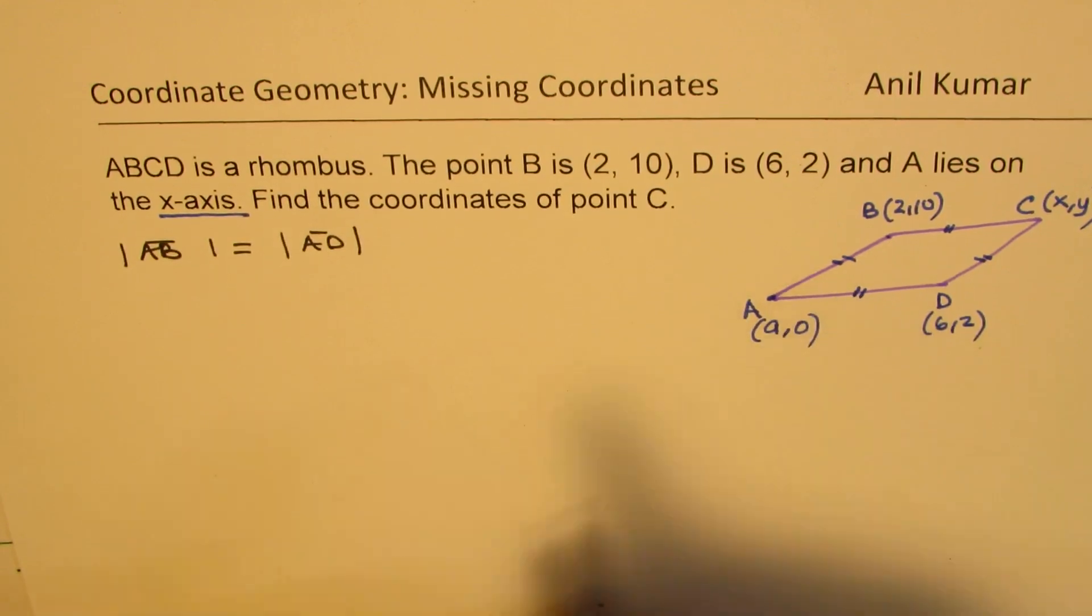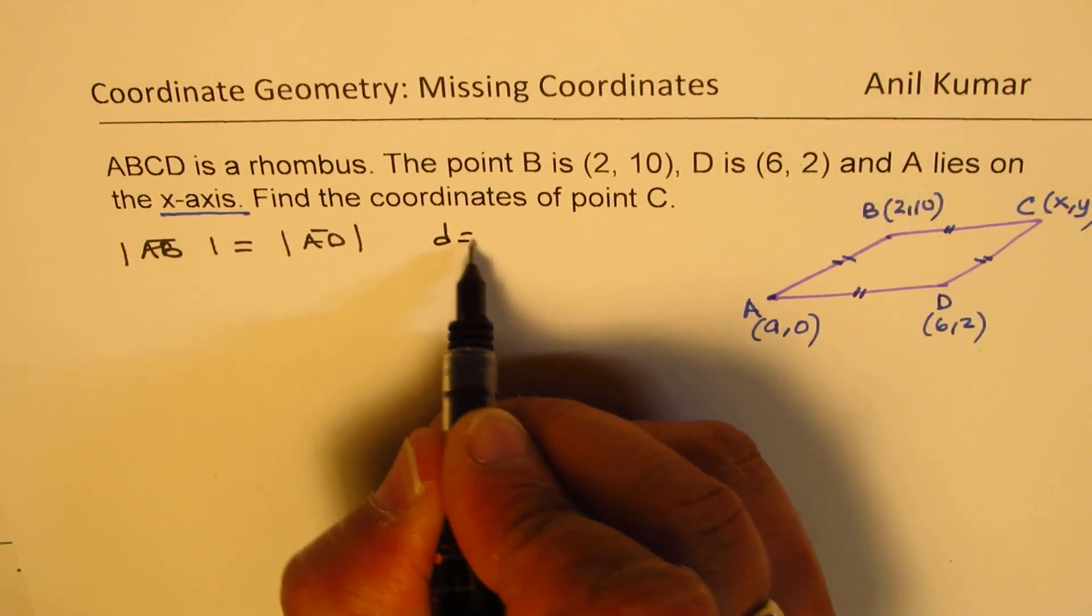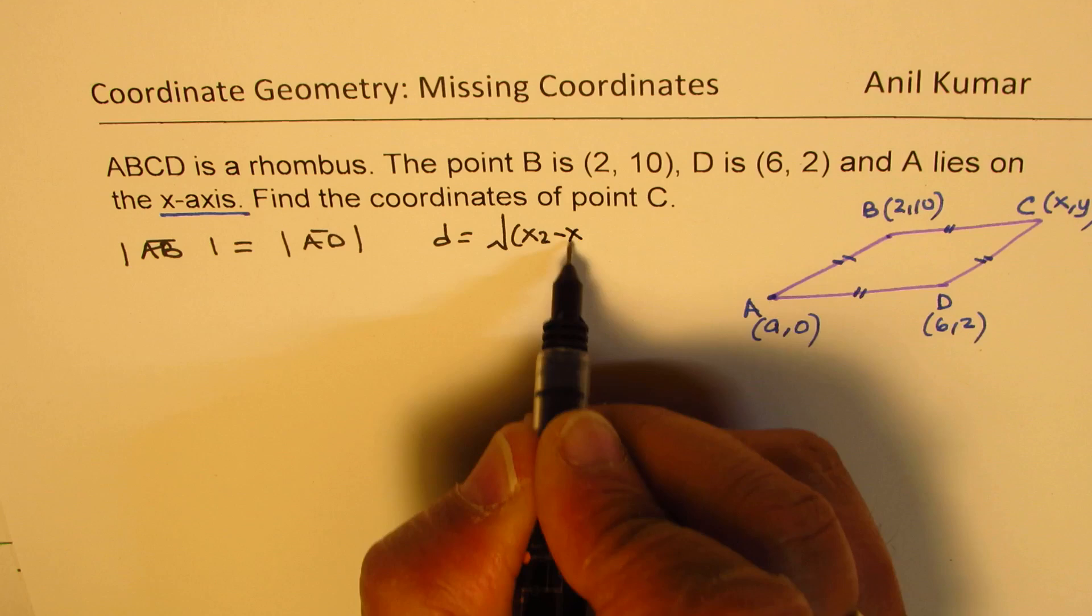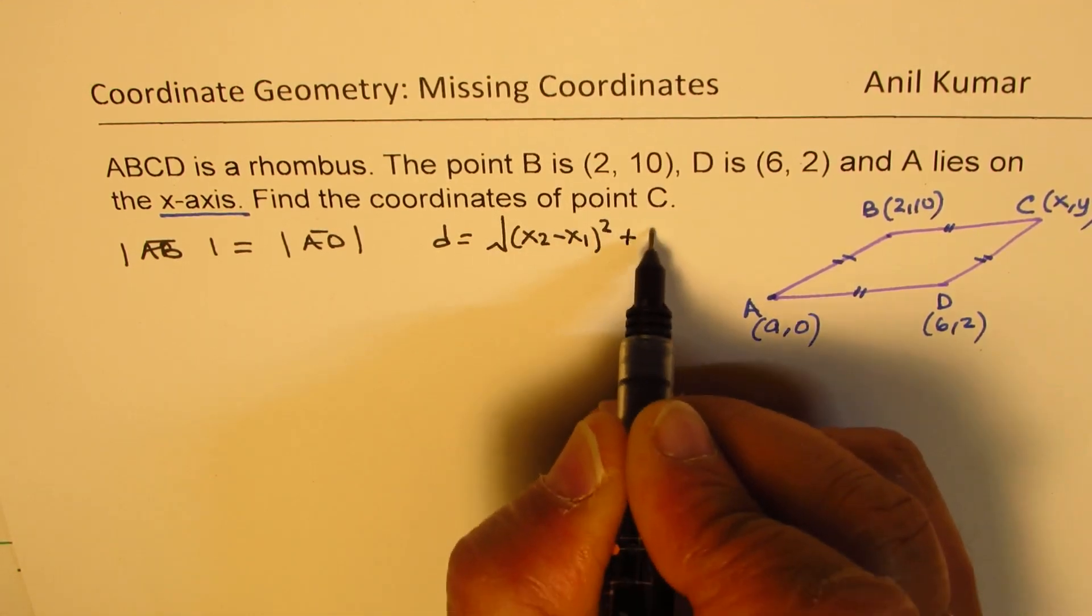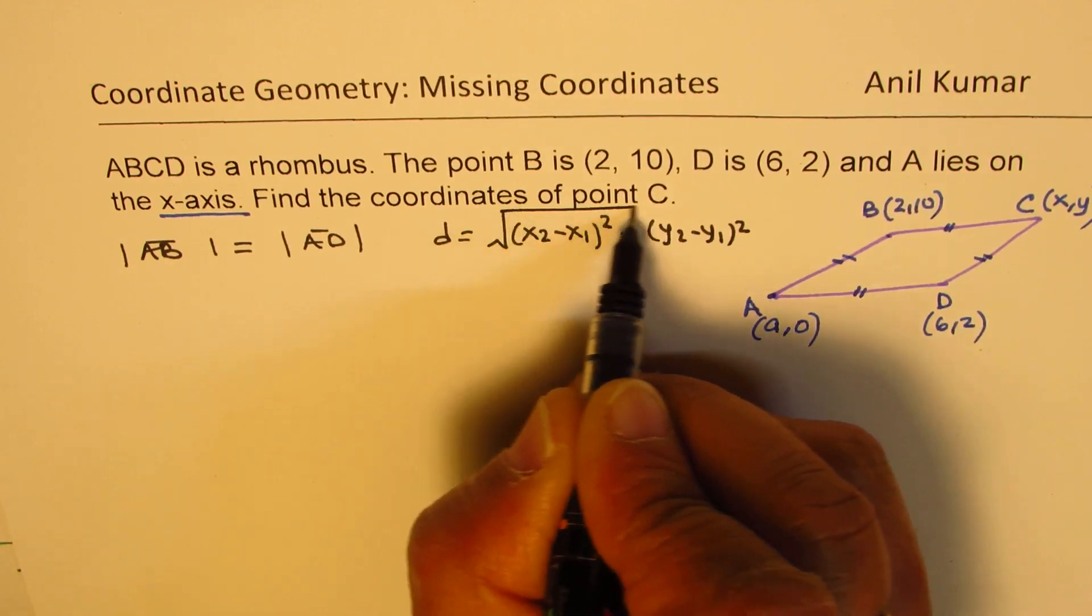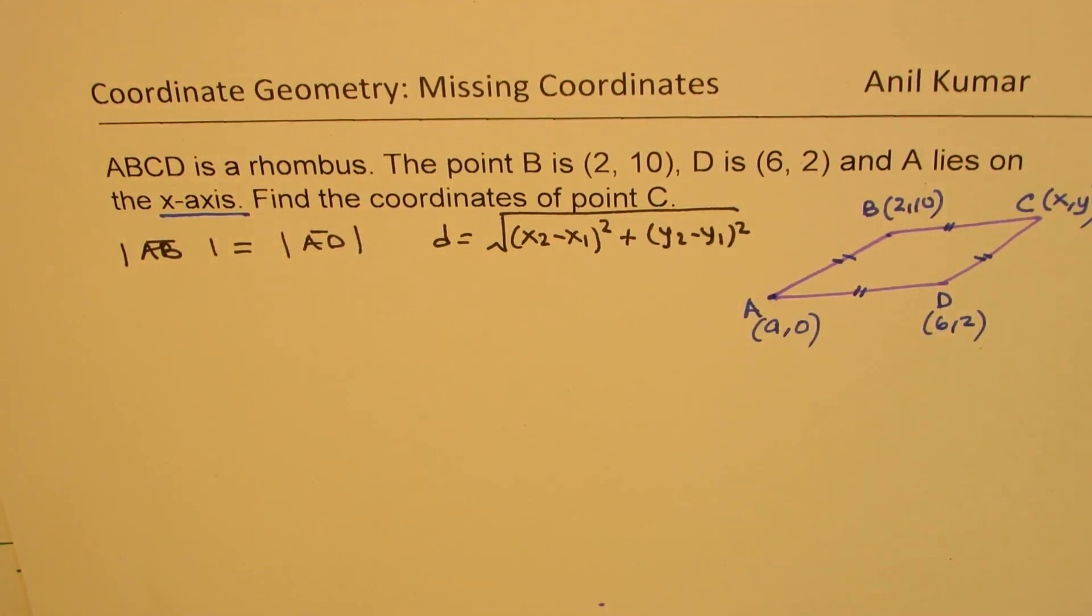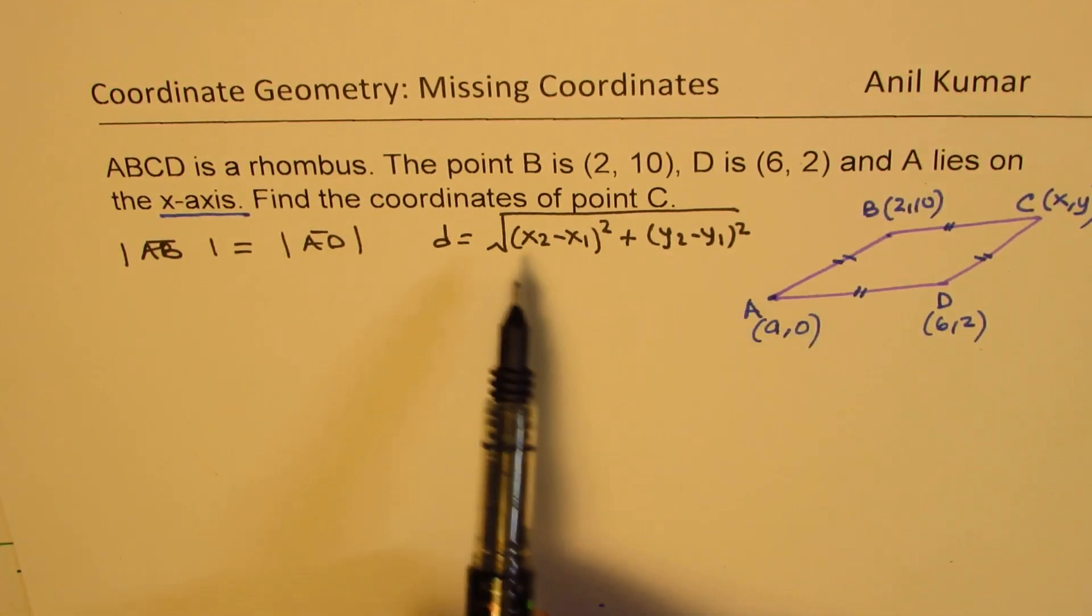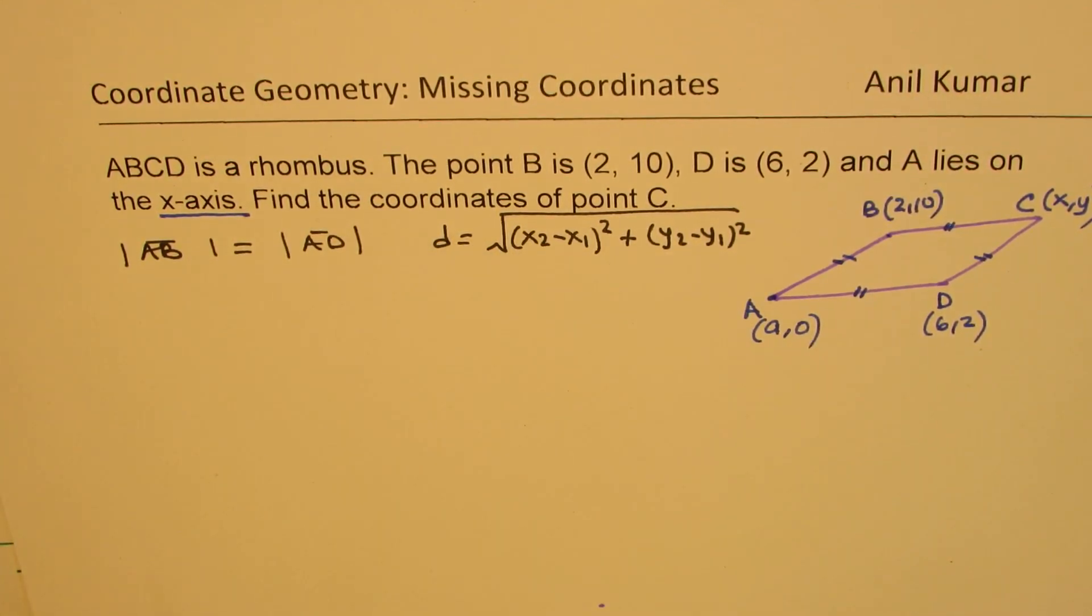So that should give us coordinates of A. The length formula is the distance formula, which is square root of (x₂-x₁)² + (y₂-y₁)². So that formula can be used. We could actually square and then compare, so no need to square root.